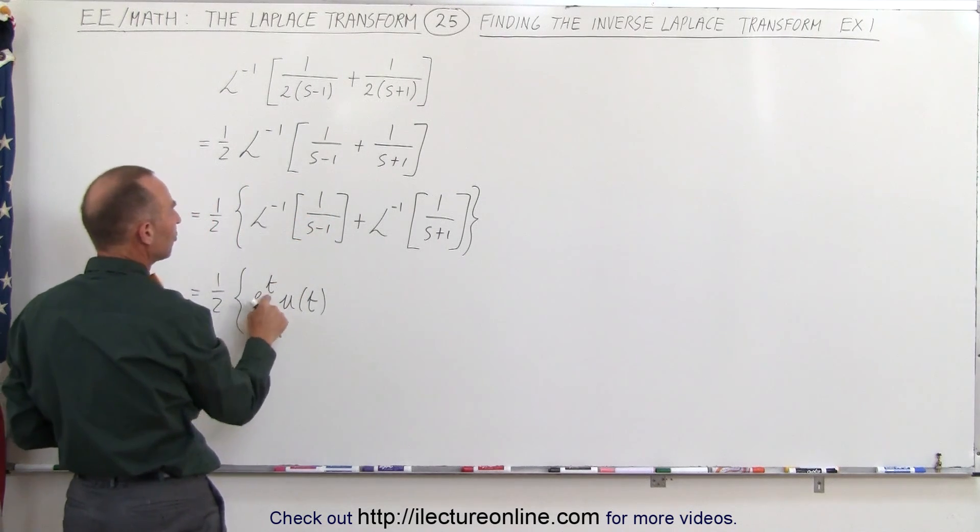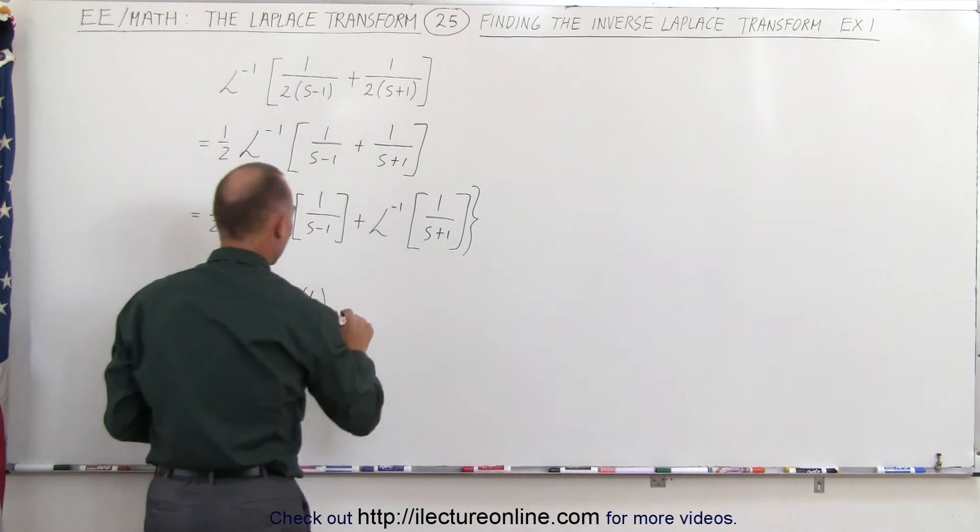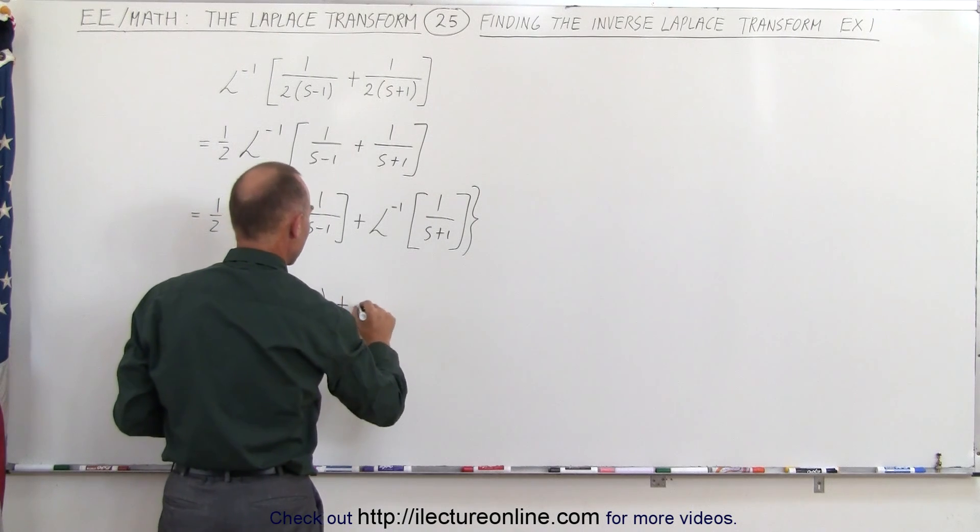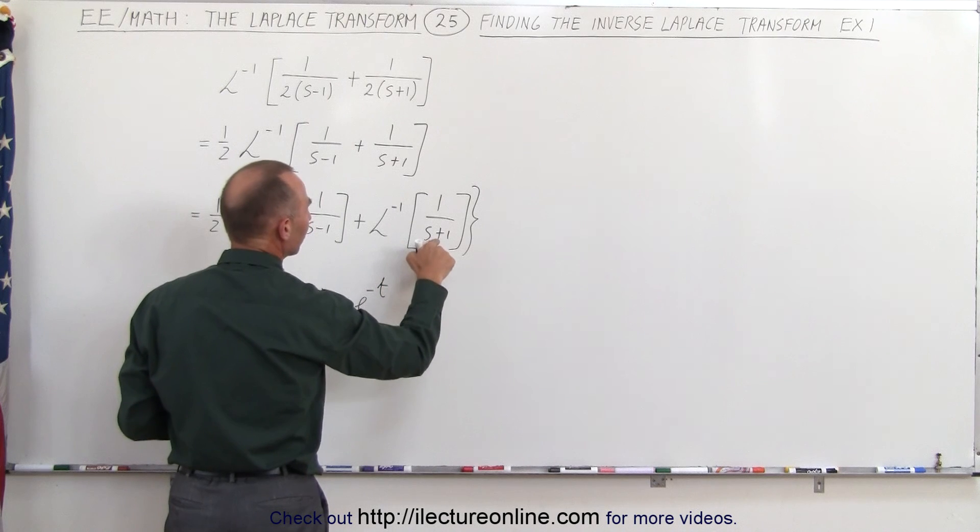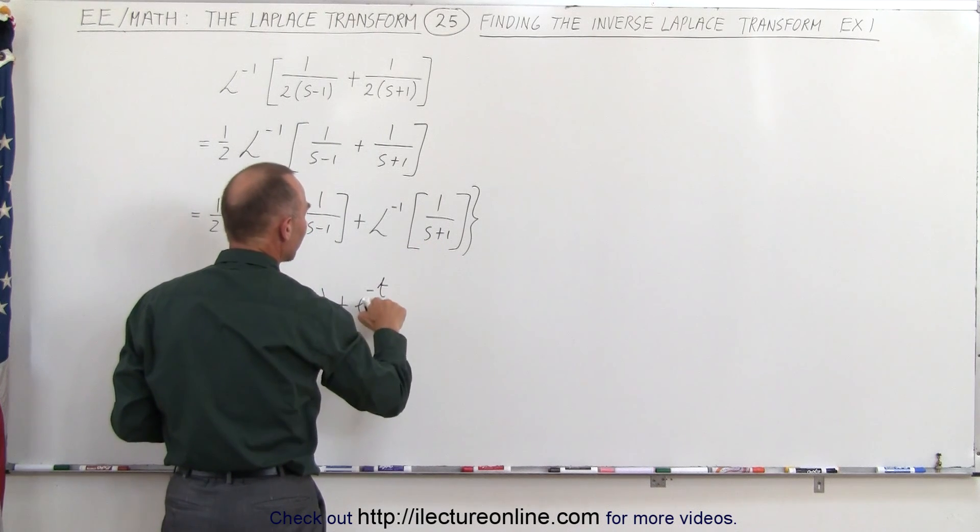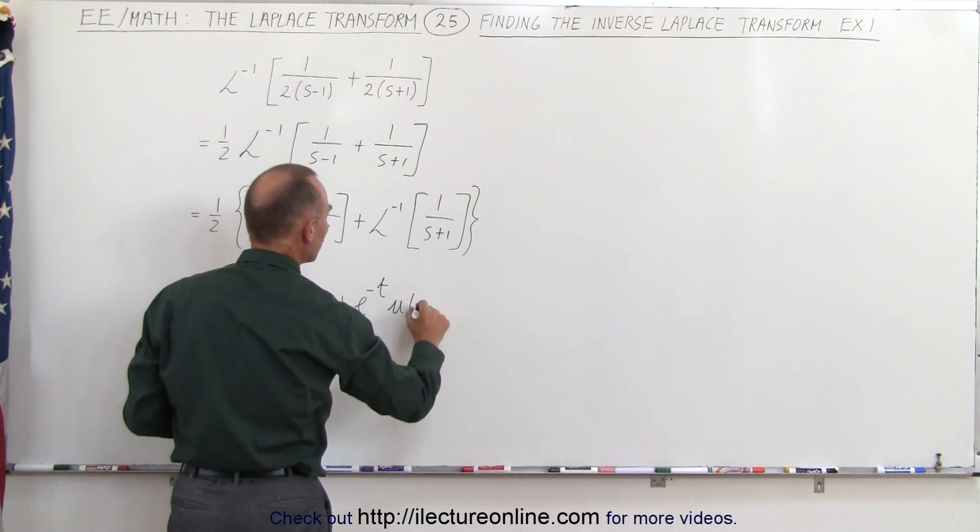We just have to have an e to the t because the minus 1 here plus e to the minus t because if this is s plus 1 it becomes e to the minus t times u of t.